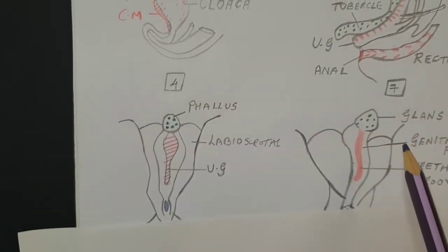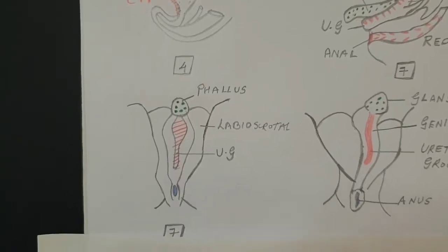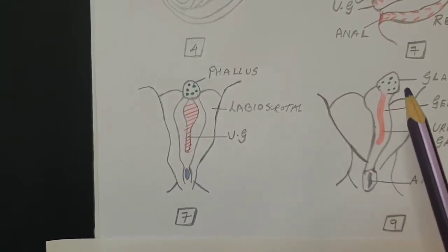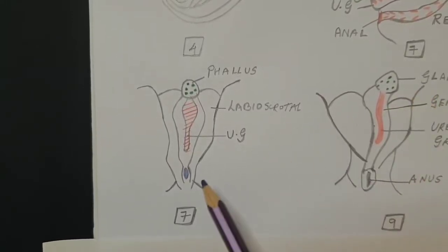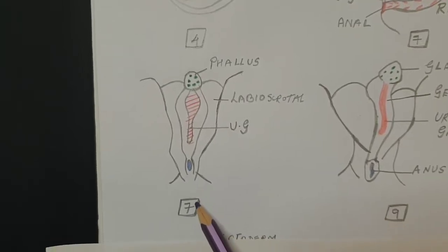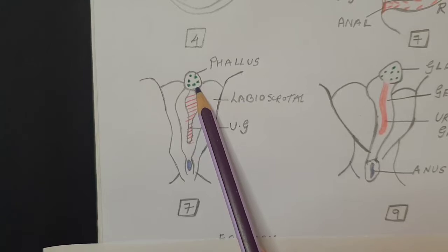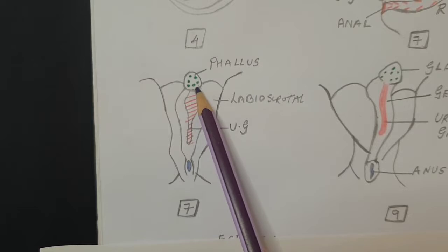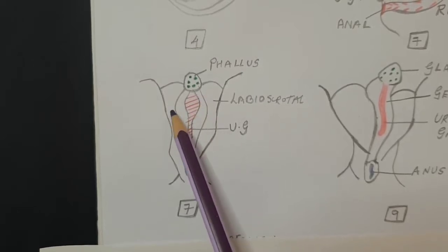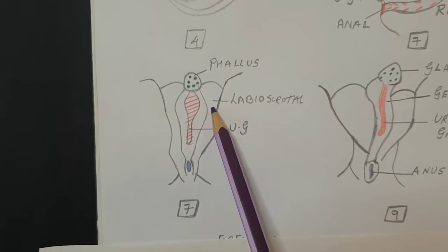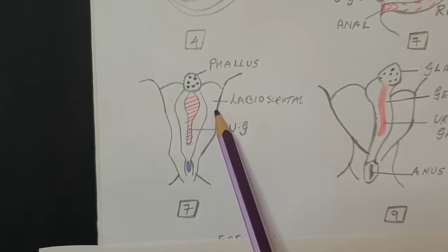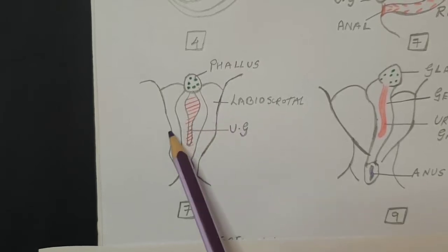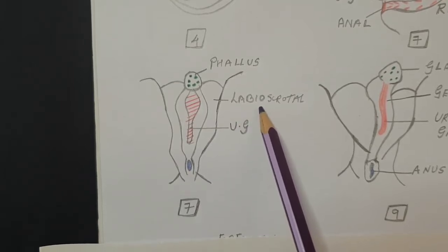As the hormonal influence occurs by the period of the seventh week, we initially saw a sagittal section of how differentiation occurs, and now this is the view of the external genitals. The genital tubercle begins to develop and helps form the phallus. On either side there is development of the labioscrotal or genital swellings, which are another pair of elevations. In males these will form the scrotum, or the labia majora in case of females.